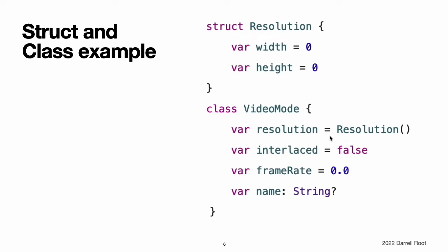The example also defines a new class called VideoMode to describe a specific video mode for video display. This class has four variable stored properties. The first, resolution, is initialized with a new Resolution structure instance, which infers a property type of Resolution. New VideoMode instances will be initialized with an interlaced setting of false, a playback frame rate of 0.0, and an optional string value called name. The name property is automatically given a default value of nil because it is of an optional type.